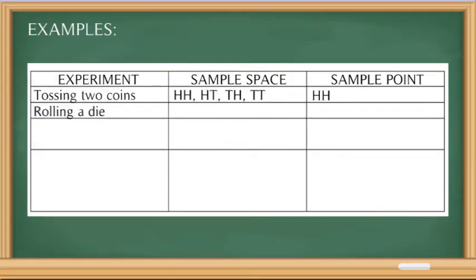For another experiment, here we have rolling a die. Our sample space will be 1, 2, 3, 4, 5, and 6. For our sample point, we can put one of the outcomes — for example, here we have 5.